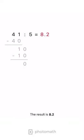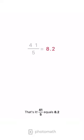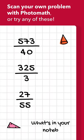The result is 8.2. That's it. 41 fifths equals 8.2. We'll see you next time.